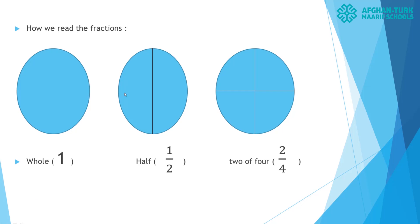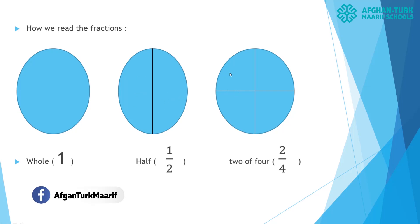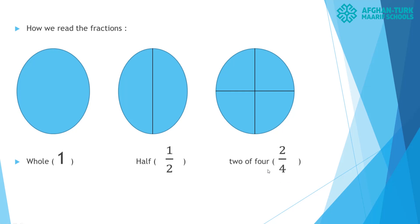I used the word 'equal' throughout — dividing into equal parts is the main thing in fractions. When separating shapes, things, or objects, the pieces should always be equal. We write the total divided parts at the denominator and the taken or used parts at the numerator. Dear students, this was our today's lesson about fractions. I hope you enjoyed. See you next lesson. Bye-bye.